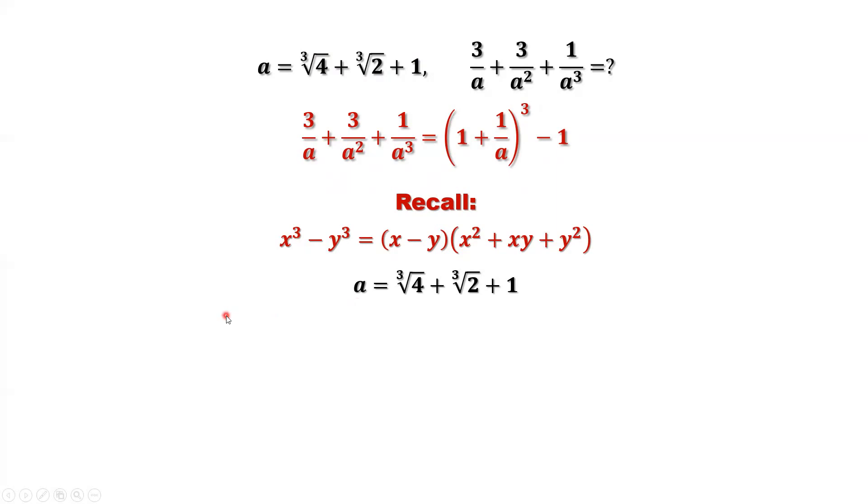This is 8. Both sides times the third root of 2 minus 1. Rewrite the third root of 4 as the third root of 2 then squared, because 4 equals 2 squared. We can fit this expression into this formula. What is x? x is the third root of 2. What is y? y equals 1.